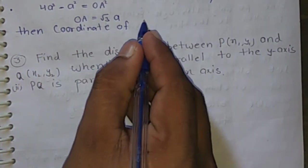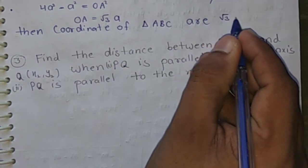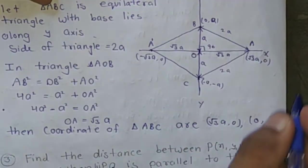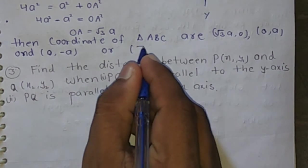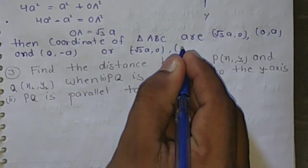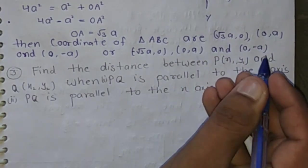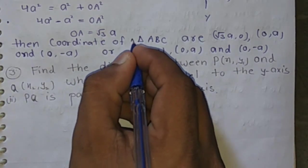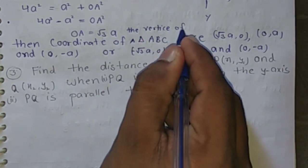Coordinates of triangle ABC are (root 3a, 0), (0, a), and (0, minus a). Or (minus root 3a, 0), (0, a), and (0, minus a). These are the vertices of the triangle, the coordinates of the vertices of triangle ABC.